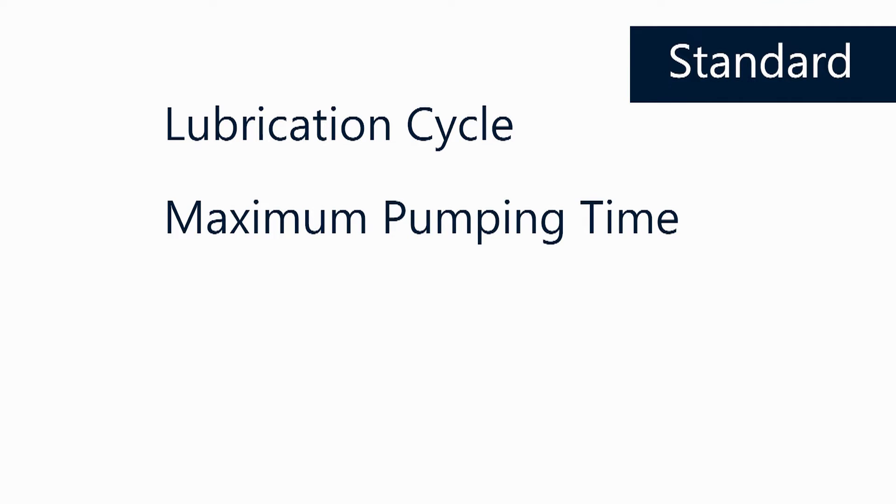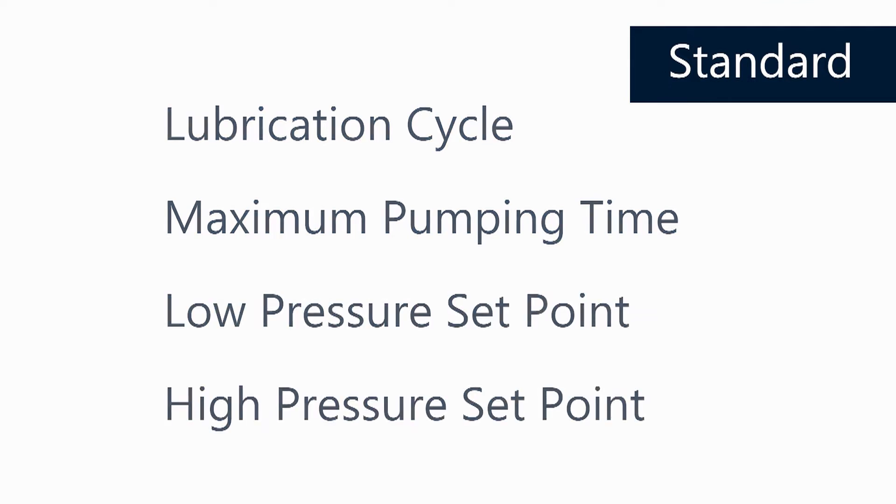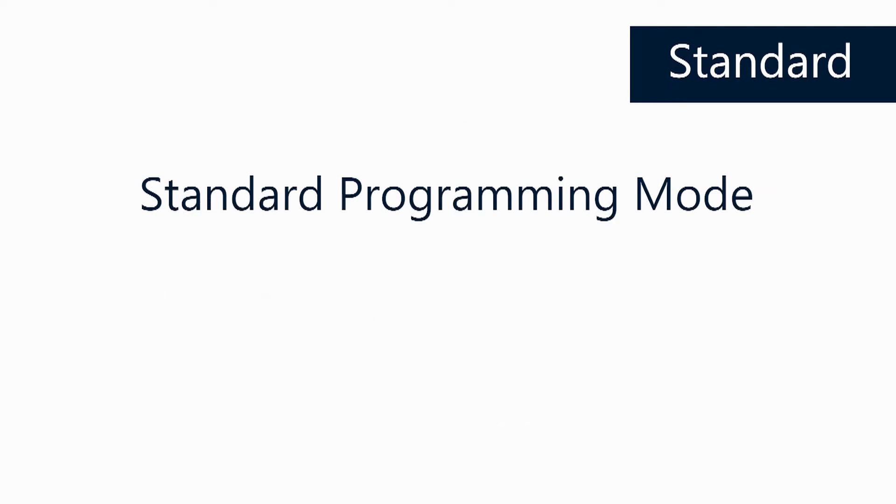The second type of parameters are the ones we are more familiar with: standard parameters. The standard parameters include set points for the lubrication cycle, maximum pumping time, low pressure set point, and high pressure set point. To adjust standard parameters, use the password 103.